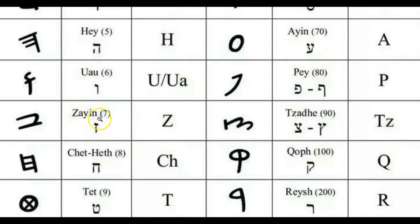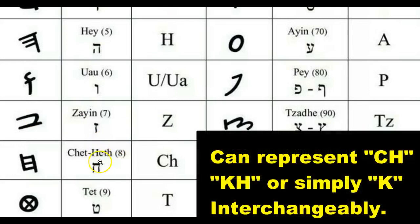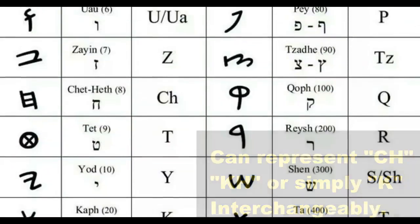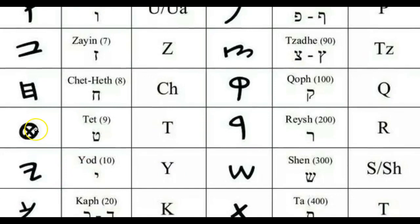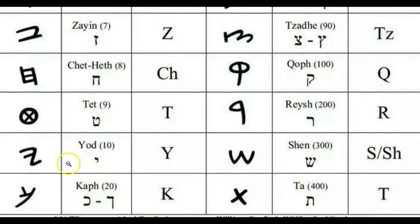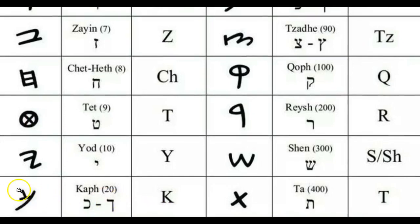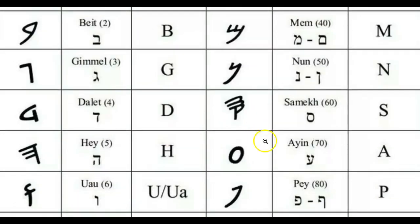Then we have Zayan, or Zayin in Modern Hebrew, which makes the Z sound and is represented by the Weapon. We also have the Ket, or Chet in the Modern, which makes the K or H sound interchangeably and represents the Wall of Separation. The Yad makes the Y sound and represents a hand, while the Kop makes the K sound and represents the palm of a hand — to open, to reveal.